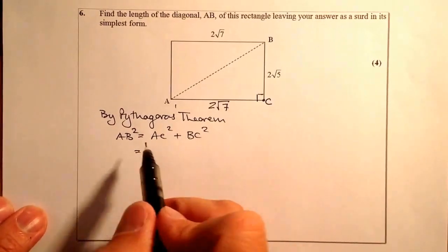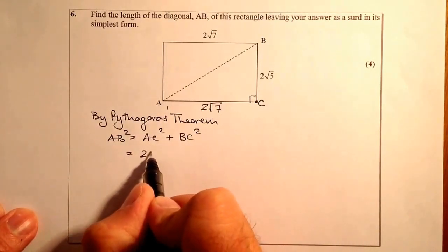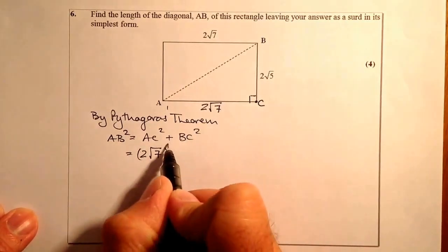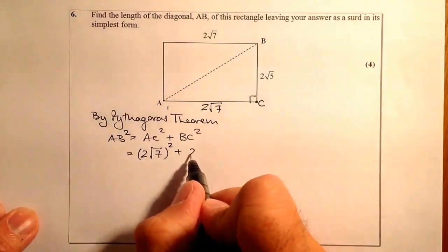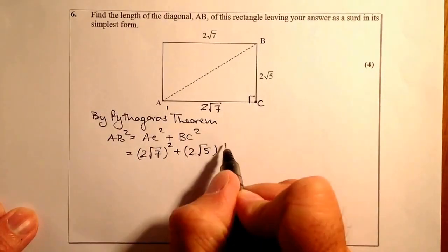So let's put our values in. AC squared will be 2√7 squared plus BC squared, which is 2√5 squared.